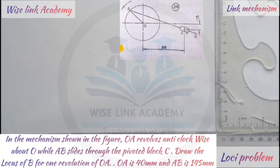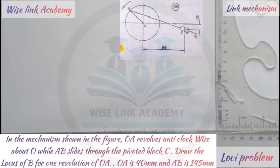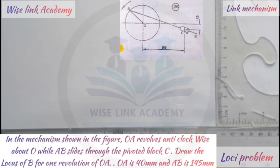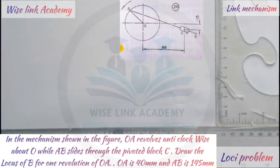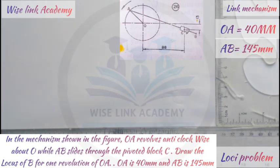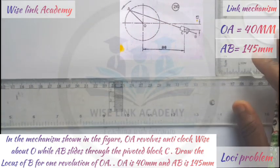So let's resolve this. Our first task for every link mechanism problem is to reproduce the sketch part. I'm given that OA is 40mm, so I'm going to construct out what I've seen in the right-hand side of the screen.